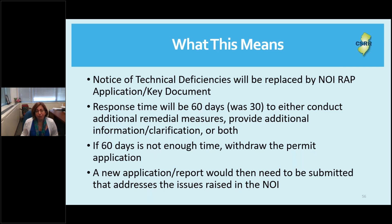For example, if the department's NOI states that delineation was not complete, you have the option of conducting additional sampling, providing justification as to why you thought your delineation was complete, or both. If 60 days is not enough time to conduct your sampling or provide your information, please just withdraw the permit application or the key document. If your additional delineation samples were also dirty and you needed more time to mobilize again, please just withdraw your document at that point. If you withdraw, you will need to submit a new document or application that addresses all of the issues raised in the NOI when you resubmit.